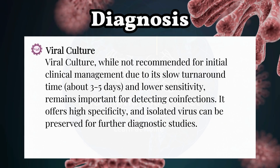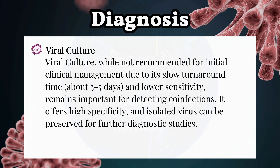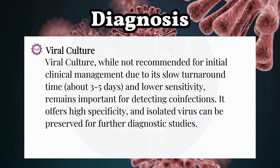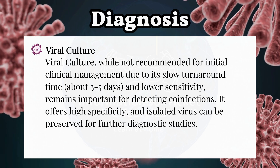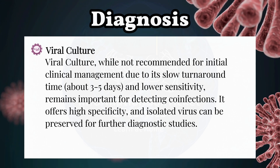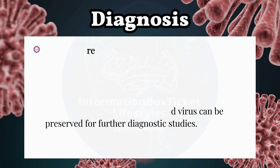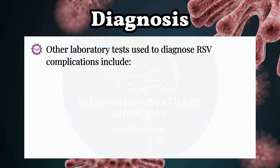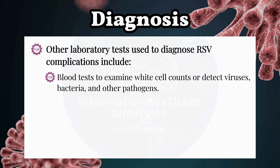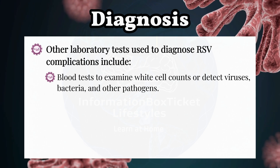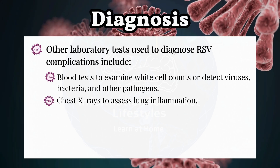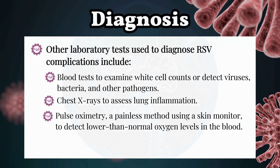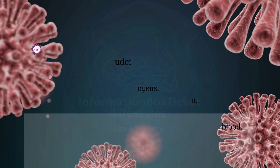PCR can be more costly than DFA and may have a longer turnaround time in certain laboratory settings. Viral culture, while not recommended for initial clinical management due to its slow turnaround time of about three to five days and lower sensitivity, remains important for detecting co-infections and offers high specificity. Other laboratory tests used to diagnose RSV complications include blood tests to examine white cell counts or detect viruses and bacteria, chest x-rays to assess lung inflammation, and pulse oximetry — a painless method using a skin monitor to detect lower-than-normal oxygen levels in the blood.